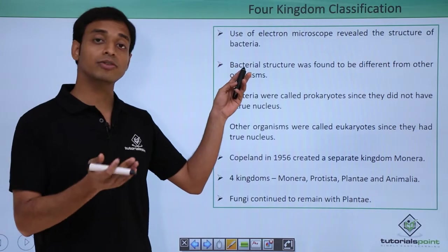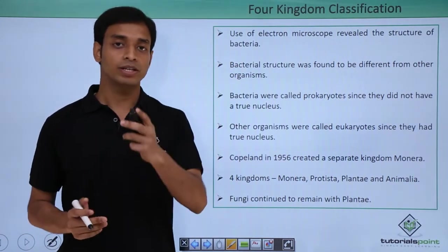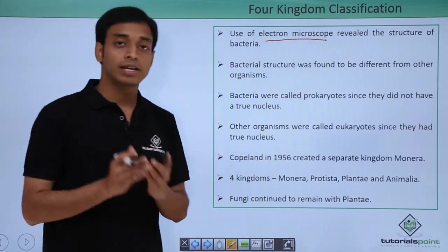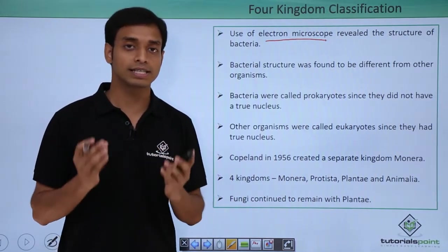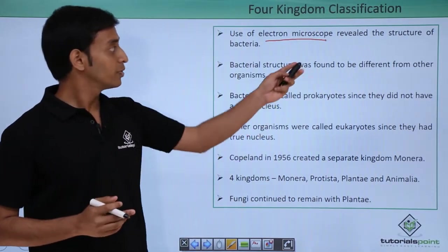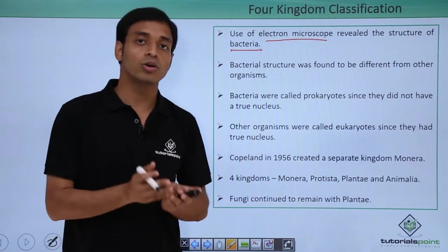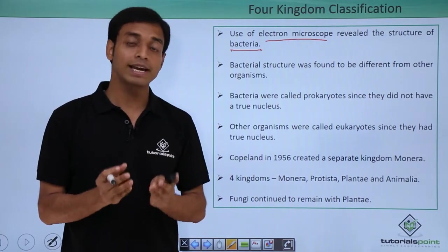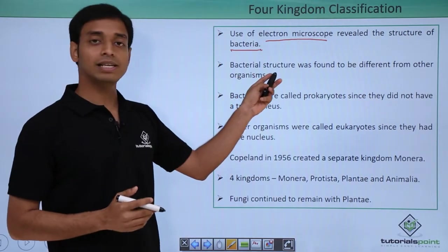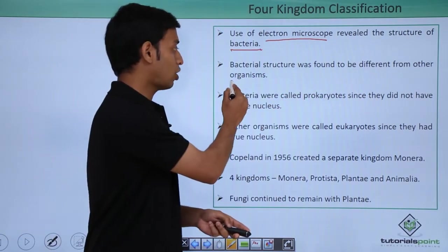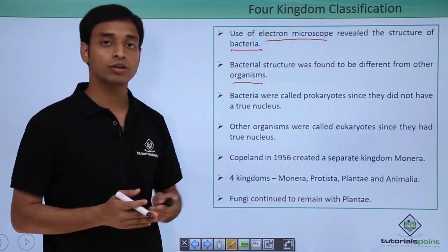This system of classification was basically put forward because of a very important discovery: the discovery of the electron microscope. Because of the electron microscope, the structures of various cells got revealed. It revealed the structures of most importantly bacteria, and we got to know how a bacteria looks and how it is different from other organisms. The bacterial cell structure was found to be different from other organisms, which was possible only because of the invention or discovery of the electron microscope.